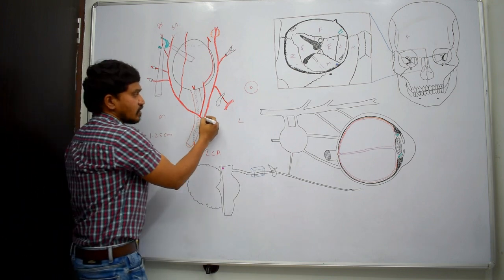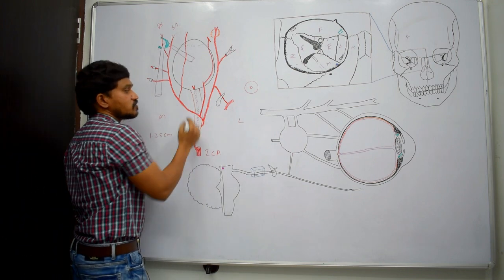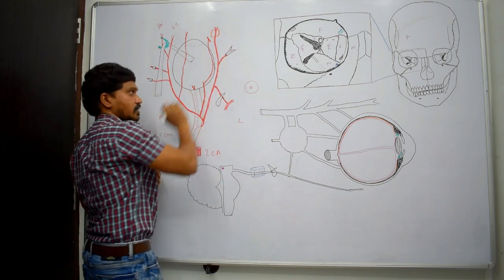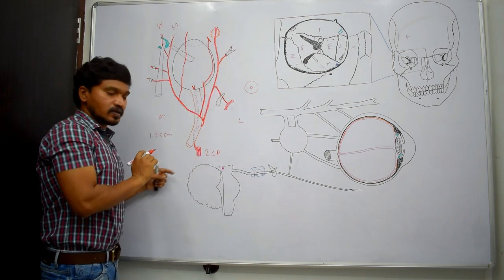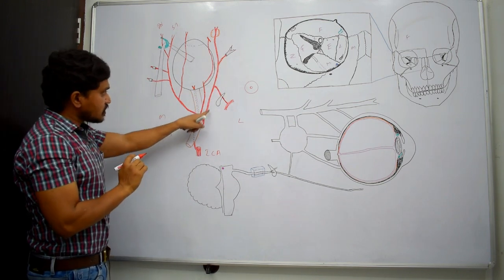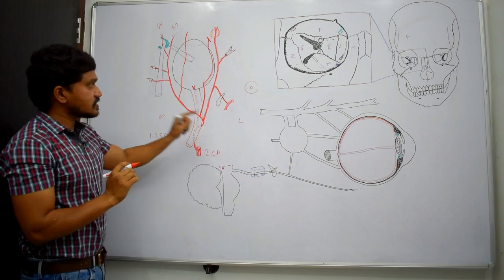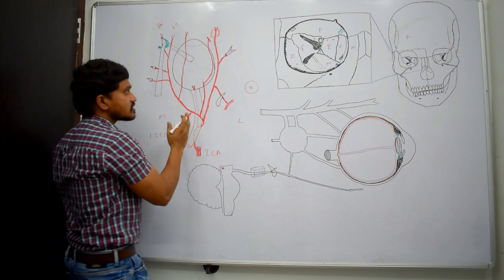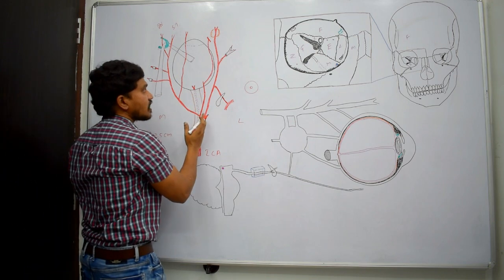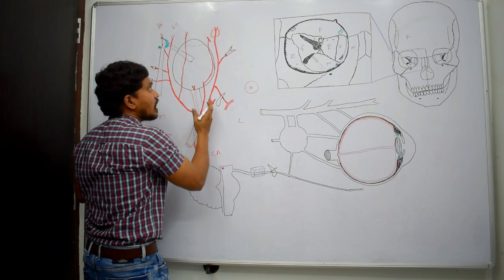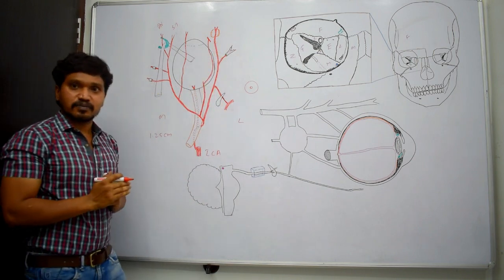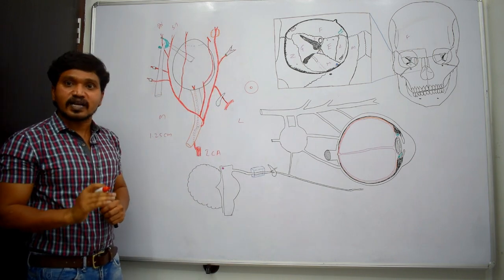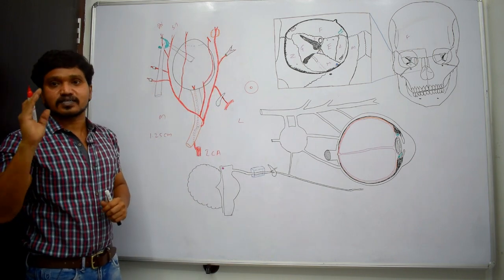The largest branch from the ophthalmic artery is the lacrimal artery. This lacrimal artery runs along the lateral part of the orbit, just above the lateral rectus muscle.